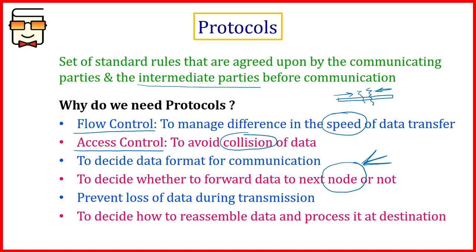When packet switching is happening, different packets take different routes and travel different paths to reach the destination. At the destination they can be received in a different order. Protocols tell the receiver how to reorder the packets so they can reconstruct the original message. All these functions make protocols very useful, and there are different kinds of protocols for different purposes.